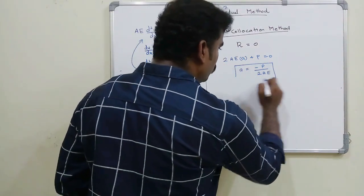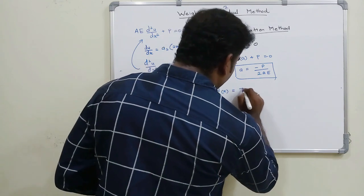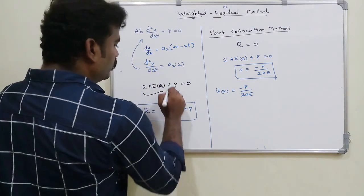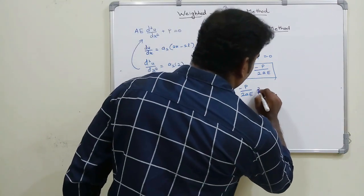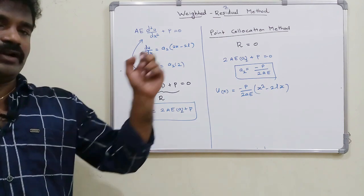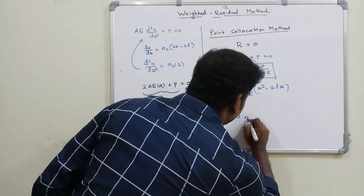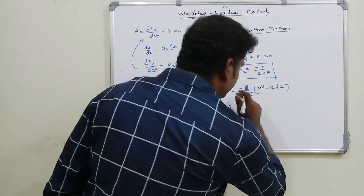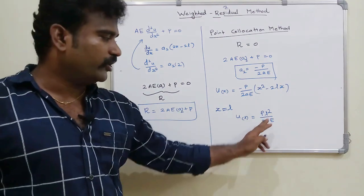Now substituting a₂ = −p/(2AE) into the trial function: u(x) = [−p/(2AE)] · (x² − 2Lx). To find the deflection at x = L: u(L) = [−p/(2AE)] · (L² − 2L²) = pL²/(2AE).